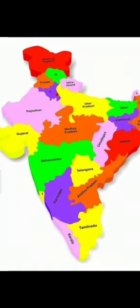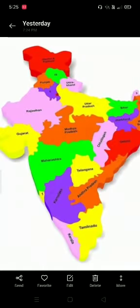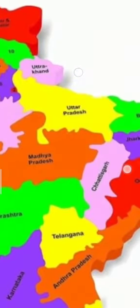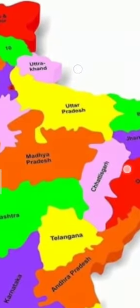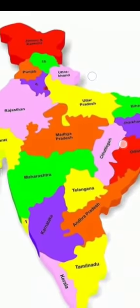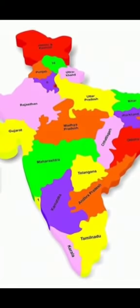Next is Chhattisgarh. Here you can see where Chhattisgarh is located. It is bordered by the state of Madhya Pradesh, which lies in the North West direction, and Chhattisgarh itself lies in the North East direction.